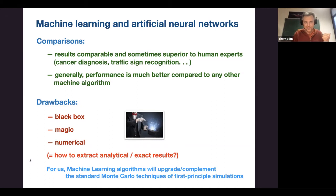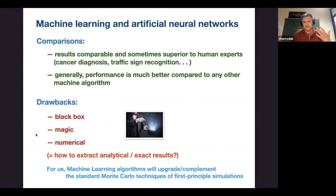There are serious drawbacks: machine learning is a black box — a complicated program made of simple elements that together becomes very complicated. It requires significant computer power, looks like magic sometimes, and is numerical — you cannot get analytical results out of it. For us, machine learning algorithms will be used to upgrade or complement existing standard Monte Carlo techniques — first-principle simulations — to classify and understand the huge amount of data from our numerical simulations.